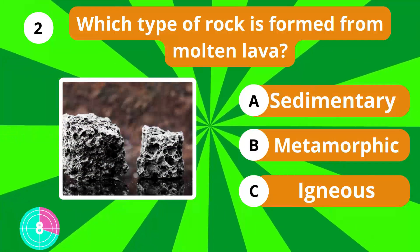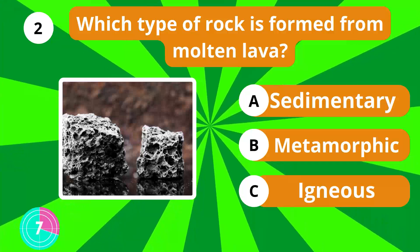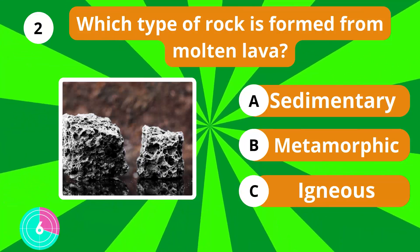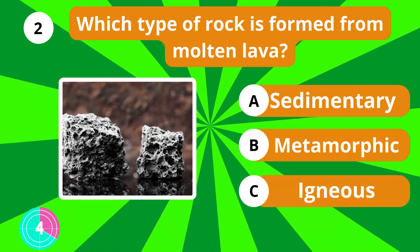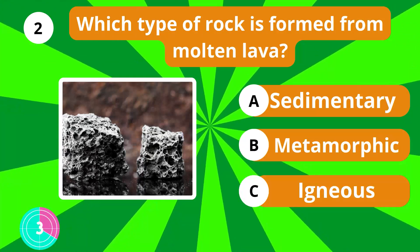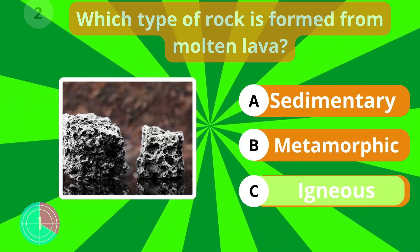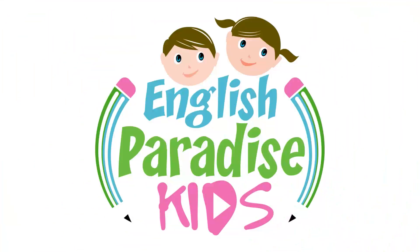Which type of rock is formed from molten lava? Igneous.